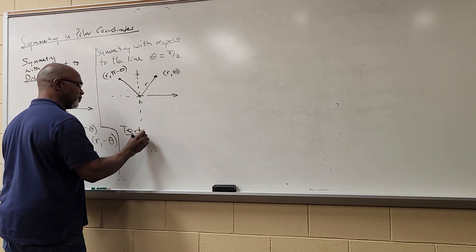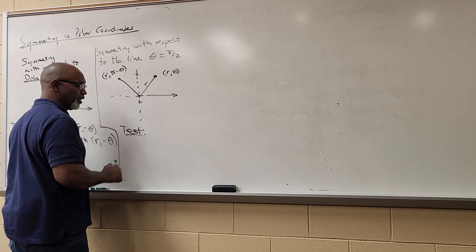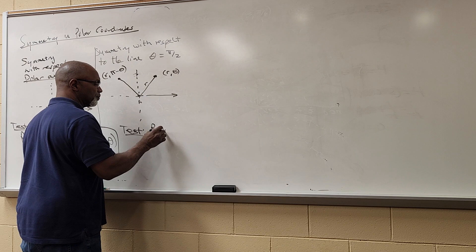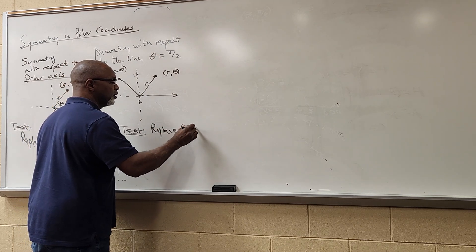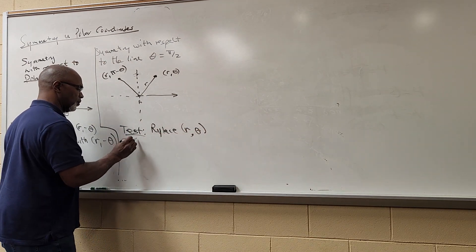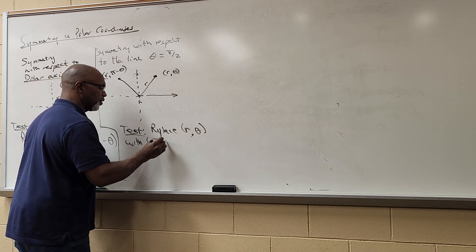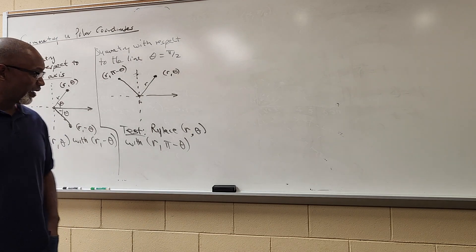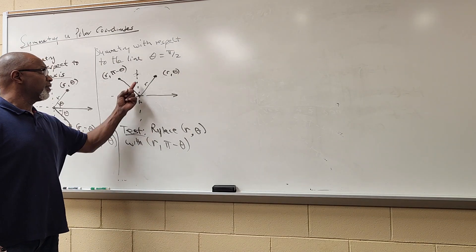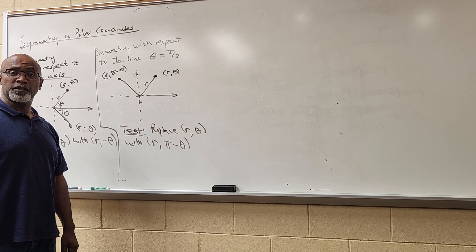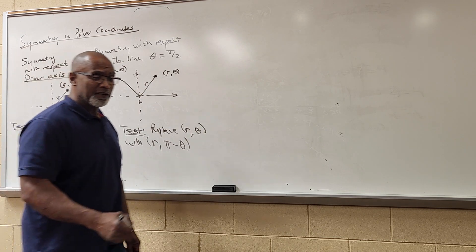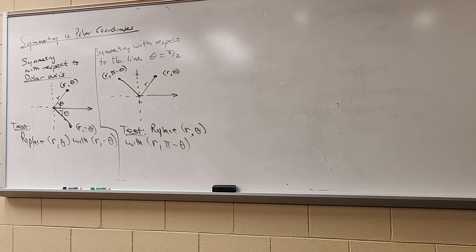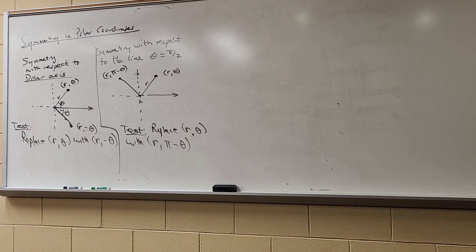To figure out if a function is symmetric with respect to the line θ = π/2, we replace (r, θ) with (r, π - θ). If we get the exact same function we started with, then the function is symmetric with respect to θ = π/2. This means we only have to graph one half of it and use symmetry to get the other half.